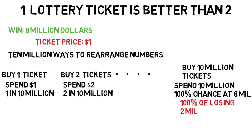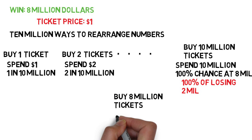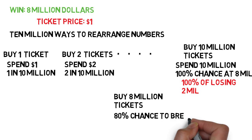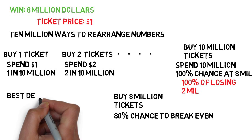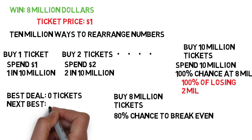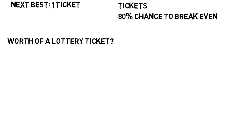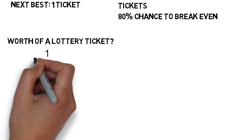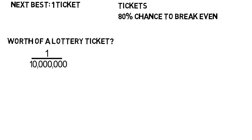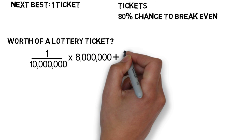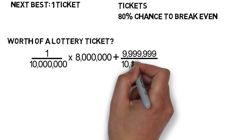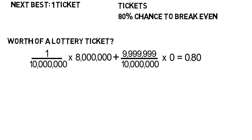As you keep going from one ticket to two and so on, it's more obvious that the deal is worse and worse. You can try it with 8 million tickets and you have an 80% chance of breaking even at best. The best deal when it comes to playing the lottery is buying zero tickets. The next best is buying one. You can take your odds of winning based on one ticket, multiply by how much you would win, plus your chance of losing times how much you'd win in that case. Add them up and you get 80 cents.